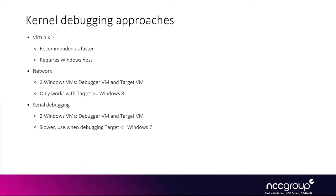There are three kernel debugging approaches: VirtualKD, Network, and Serial Debugging. VirtualKD is the recommended one — it's the fastest method if you have a Windows host, but it won't work if you have macOS or Linux as a host. Network debugging requires two Windows VMs, but only works if the target VM is running Windows 8 or above — it won't work for Windows 7 or XP. Serial port is the slowest method; you would only use it when debugging old Windows versions.